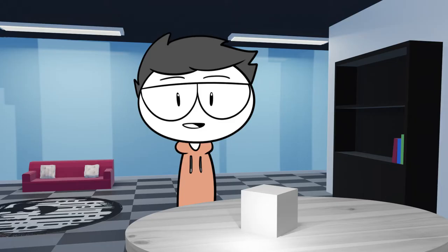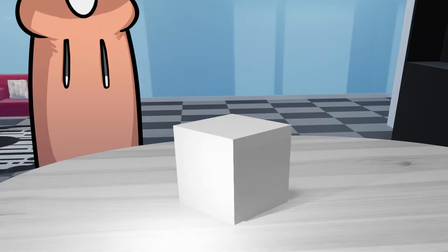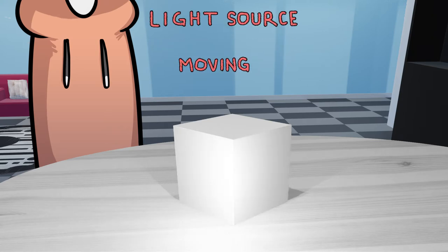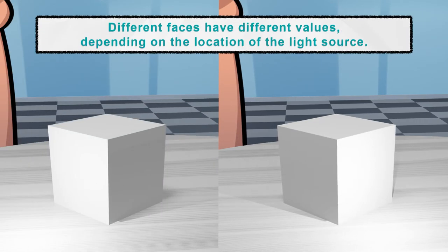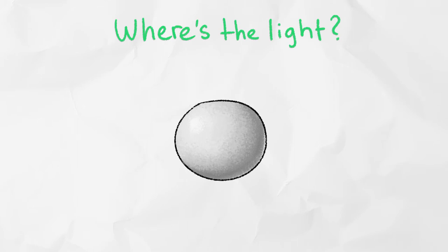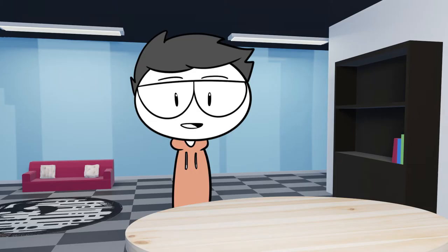Depending on how a scene is lit, values will look different. So in a simple scene like this, where we just have a cube, if we move our light source, we can see that the values of this cube are clearly changing. In one situation you might have a dark value on the right side, and if you move the light source, you might have a dark value on the left side of the cube. So not only do values tell us about the form of an object, but they also tell us about the lighting situation — where is the light source, from which side is light coming? Really, values are not just about individual objects and their form; they also play a huge role in a bigger context. And this brings us to the topic of value range.